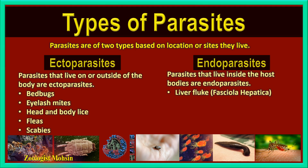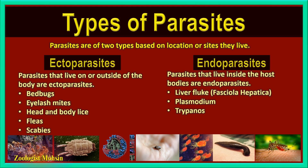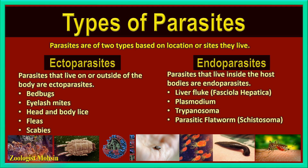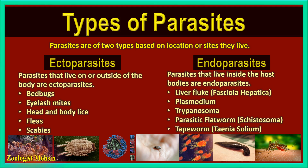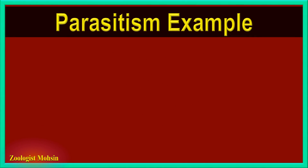Examples of endoparasites in humans include liver fluke (Fasciola hepatica), Plasmodium, Trypanosoma, parasitic flatworms, Schistosoma, and tapeworm (Taenia solium). These are the most famous and common examples of endoparasites in humans.